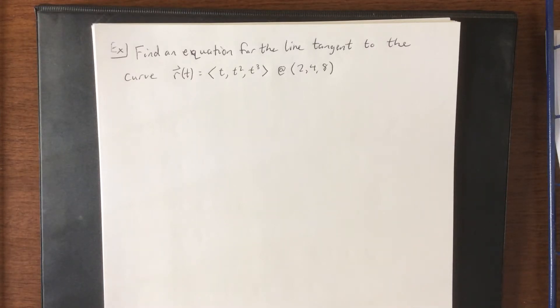For one more example for this section, what we're going to do is find an equation for the tangent line to the curve r(t) equals component functions t, t squared, t cubed, at the point (2, 4, 8).